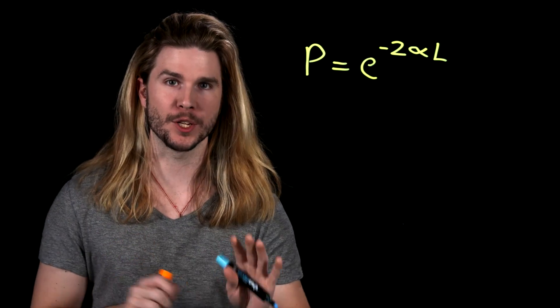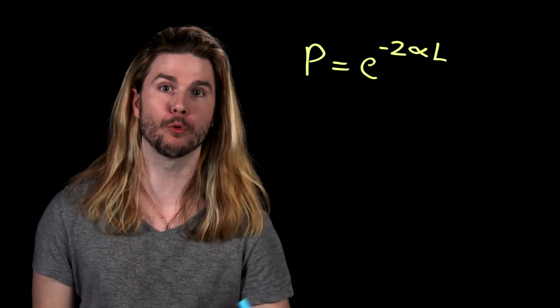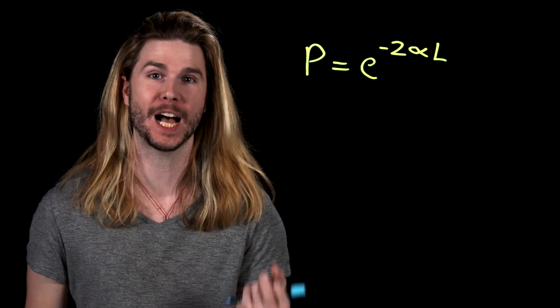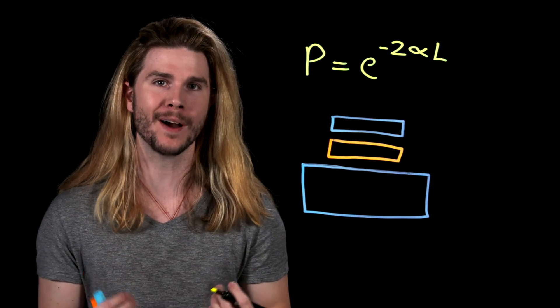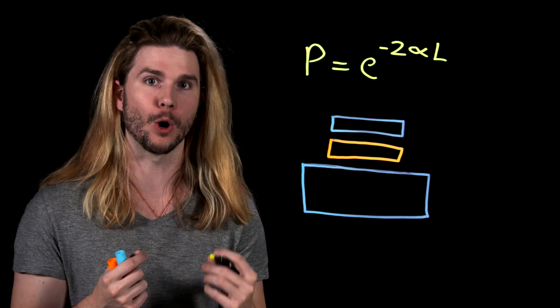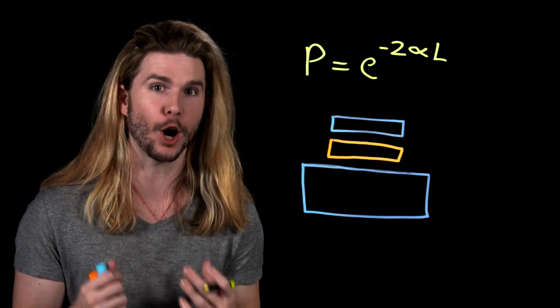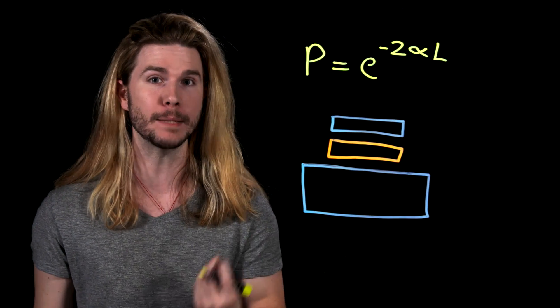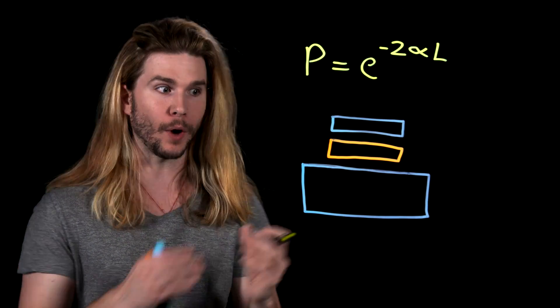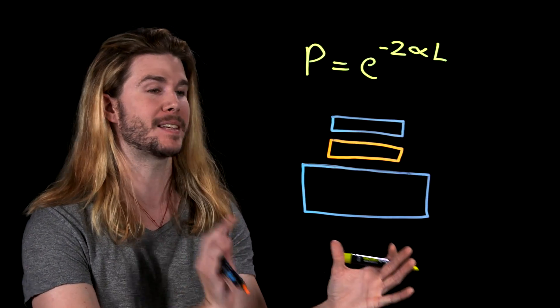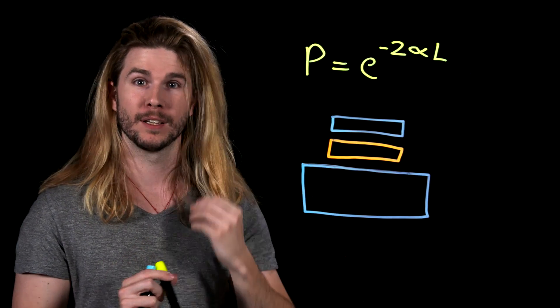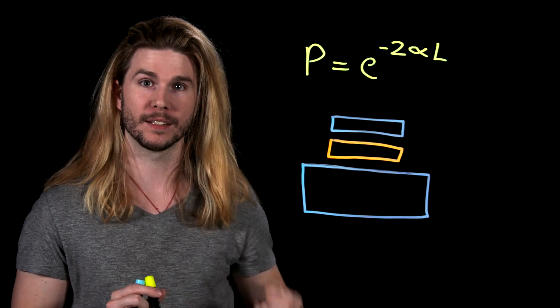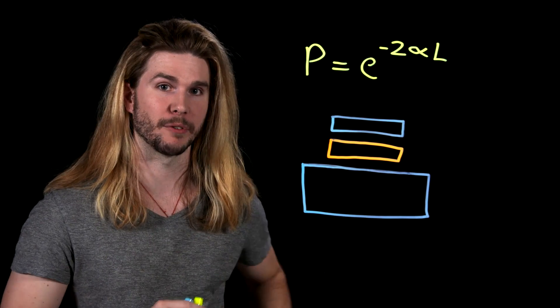Before I try to explain to you just how small one over e to the 10 to the 35 is, a comparison. At our scale, human scale, the chances of quantum tunneling are very, very low, but at smaller scales, they are good enough that we can expertly manipulate them in our technology. So right here is a very basic outline of a transistor in a flash drive, like you would find in a USB stick.